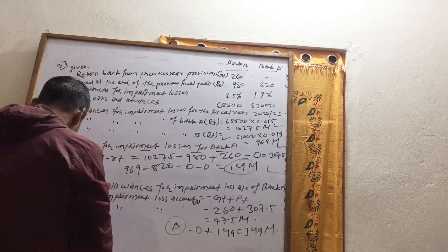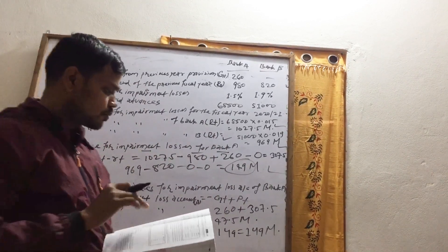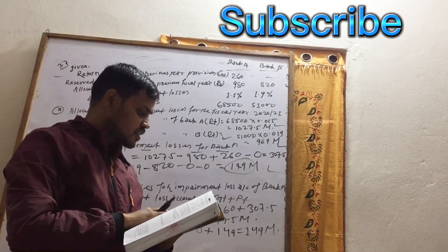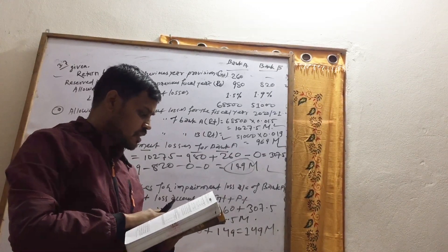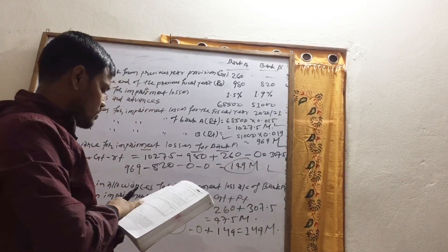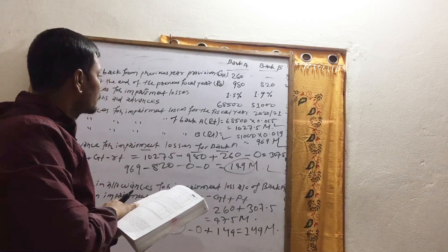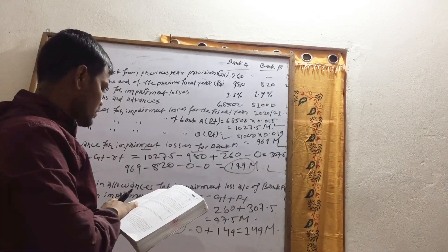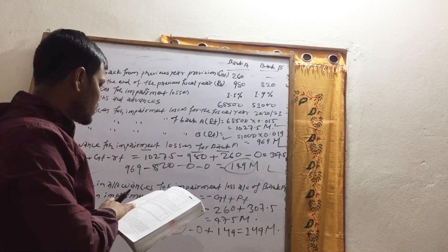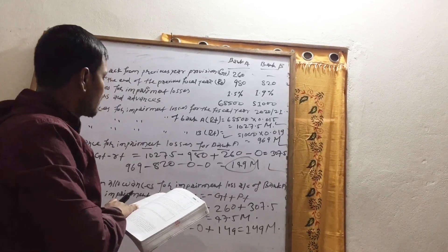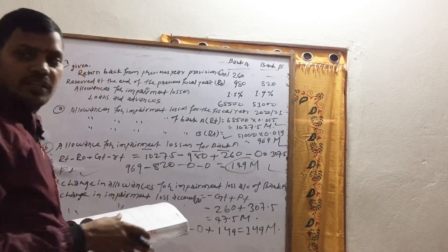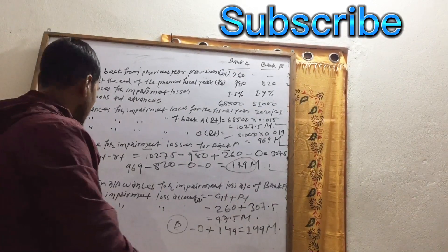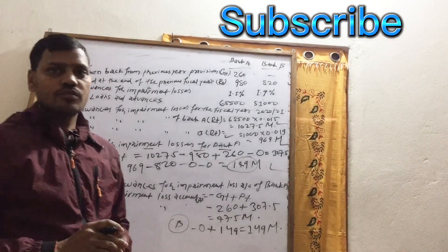Summary of all answers: Bank A RT = 1,027.5; Bank B RT = 969; Bank A provision = 307.5; Bank B net change = 149; Bank A net change = 47.5 million. All answers have been calculated.